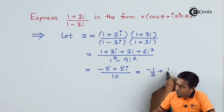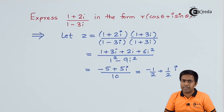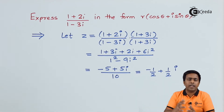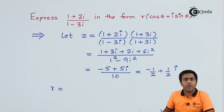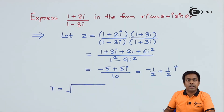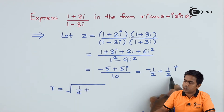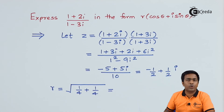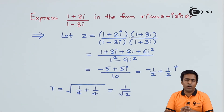Dividing the numerator separately by 10 gives us -1/2 + (1/2)i. This is the standard form of the complex number, where the real part is -1/2 and the imaginary part is +1/2. Now we can convert it to polar form. The modulus r = √((-1/2)² + (1/2)²) = √(1/4 + 1/4) = √(1/2) = 1/√2.